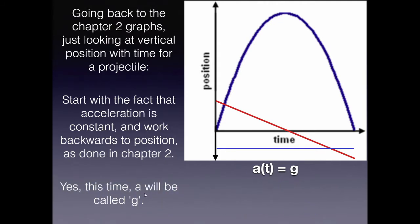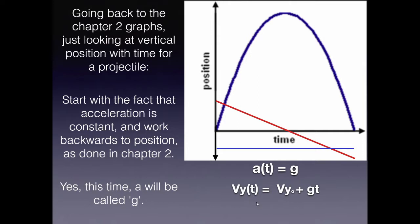To go backwards and get an equation for velocity, we do what we did when deriving the big three: we multiply the constant acceleration by t and add an initial velocity. So the vertical component of velocity with respect to time is: vy(t) = vy₀ + g·t. That's our first big equation from the vertical set.